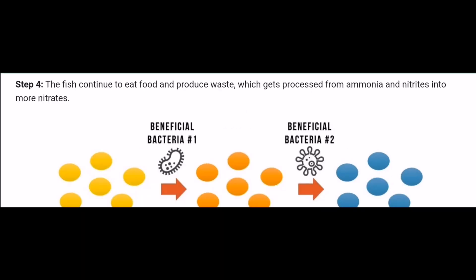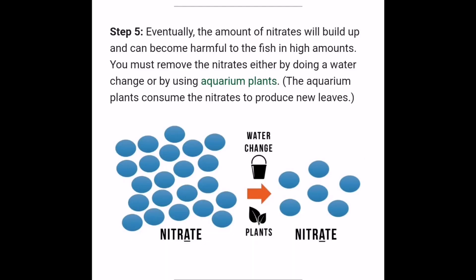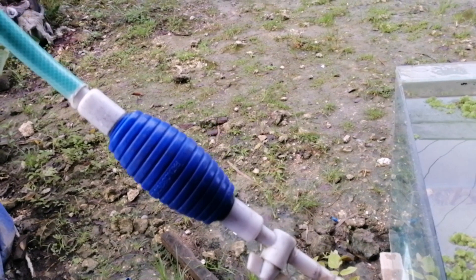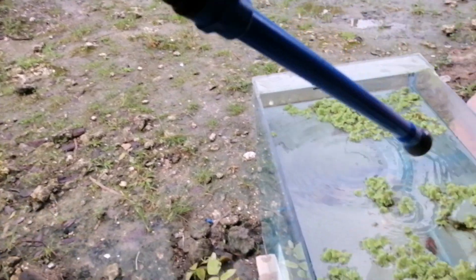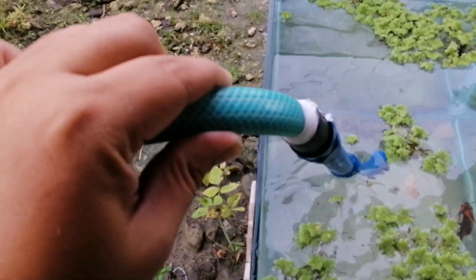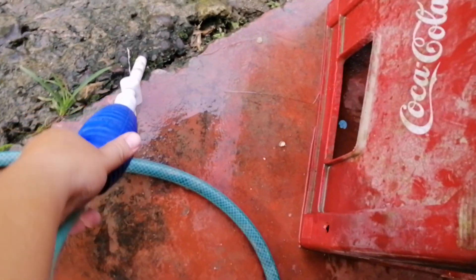On the fourth stage, the fish continue to eat fish food and produce waste, which gets processed from ammonia and nitrites into more nitrates. In the last stage of the nitrogen cycle, eventually the amount of nitrates will build up and can become harmful to the fish in high amounts. You must remove nitrates either by doing a water change or by using aquarium plants, which consume the nitrates to produce new leaves.